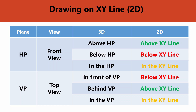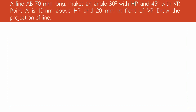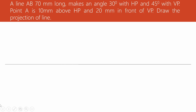We will use one example to demonstrate. A line AB is 70 mm long — this 70 mm is called the true length of the line. It makes an angle of 30 degrees with the HP and 45 degrees with the VP. Point A is 10 mm above HP and 20 mm in front of VP. Draw the projection of the line.